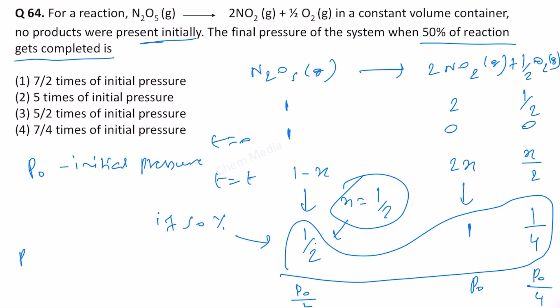When 50 percentage of the reaction is complete, let's sum all these things. P₀/2 plus P₀, that will be 3/2 P₀, plus P₀/4. So this is basically 1.75 times P₀.